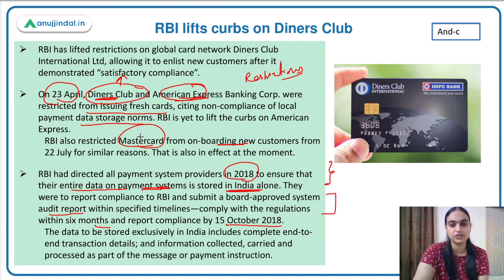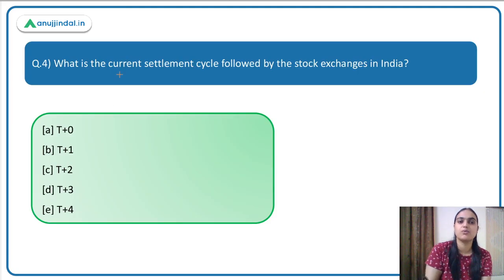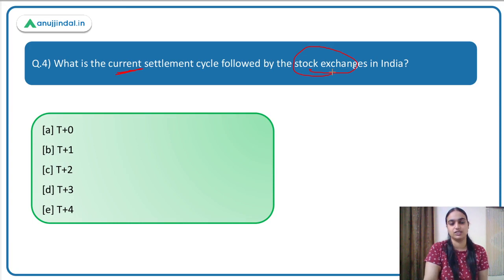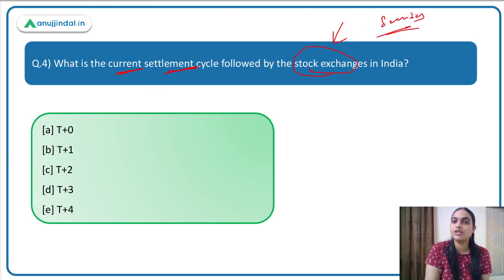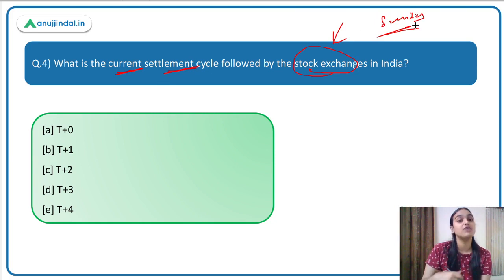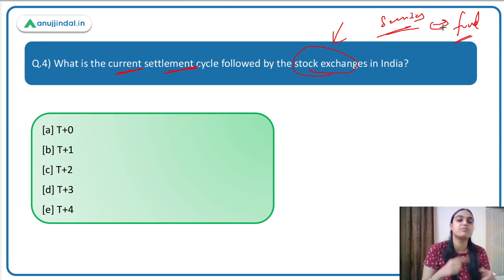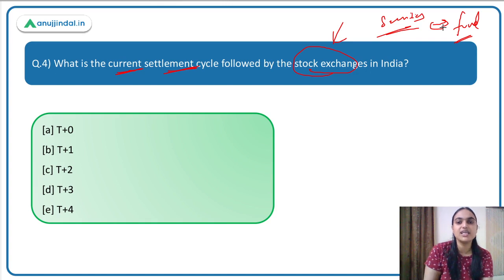Moving on to the last question: what is the current settlement cycle followed by the stock exchanges in India? If you are trading on a stock exchange and buying securities, those securities need to be transferred to your DMAT account electronically. If you are selling securities, the funds need to be transferred to your account. The time span within which this is done is called the settlement cycle.